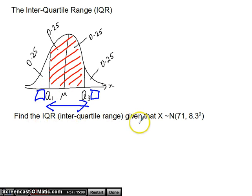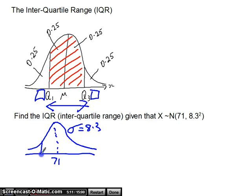So, our question is, find the interquartile range given that X is modeled by a normal distribution, with mean 71 and standard deviation 8.3. So, the first thing to do is to sketch it. We've put in our mean here of 71, standard deviation is 8.3. The Q1 and Q3 are going to be here, which is what we're going to work out. And we know that that's 0.25 there, and another 0.25 there. There's a few ways you could work this out, but we'll do it this way.